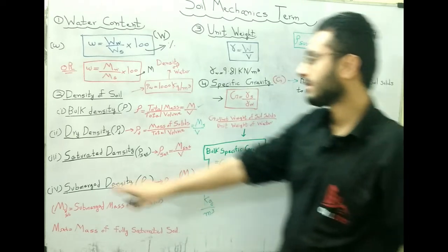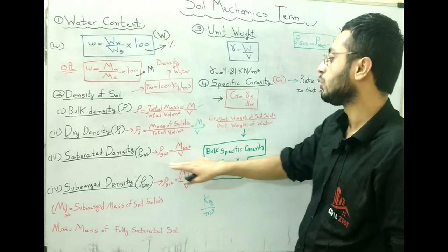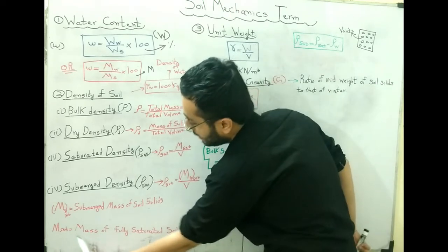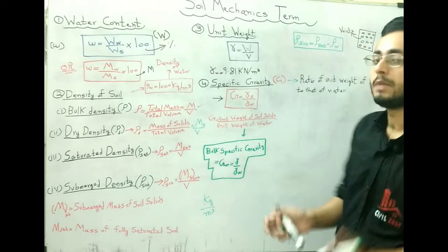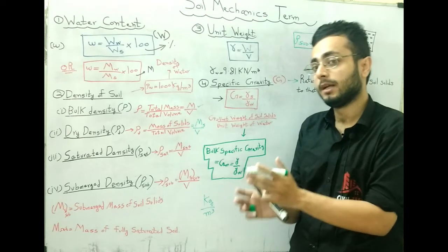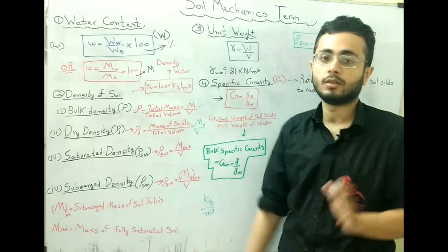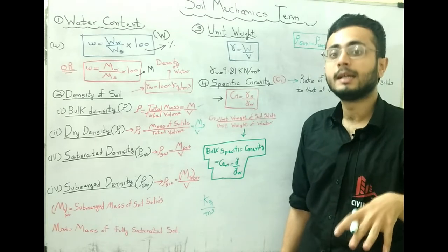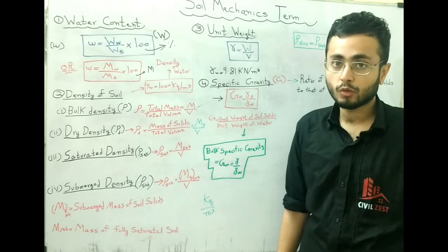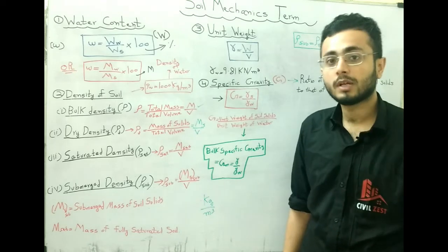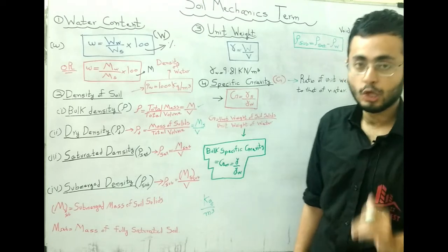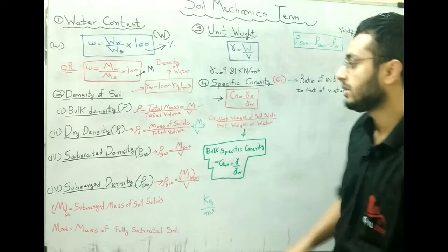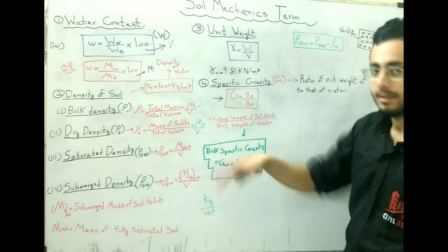Saturated density is denoted by rho_sat, and it equals M_sat divided by V, where M_sat is the mass of fully saturated soil. So saturated density is the mass of fully saturated soil divided by total volume. Fully saturated soil means all the voids are completely filled with water, the degree of saturation is 1 or 100%, representable by a two-phase diagram.